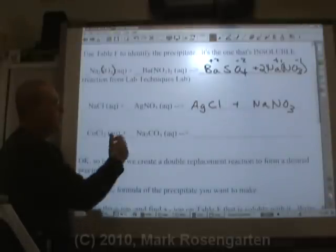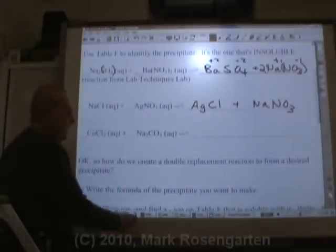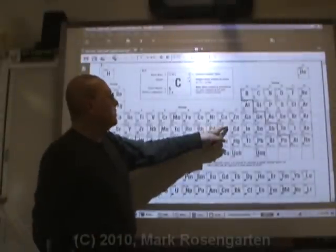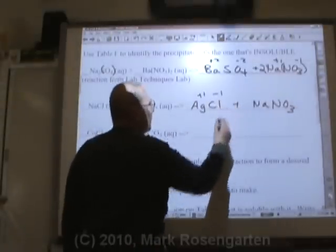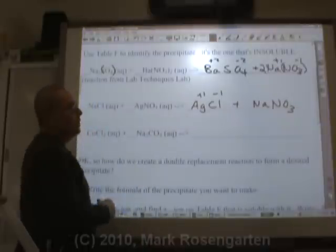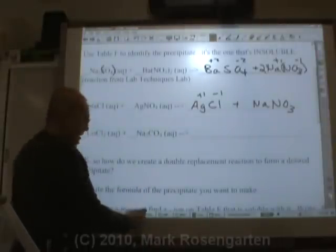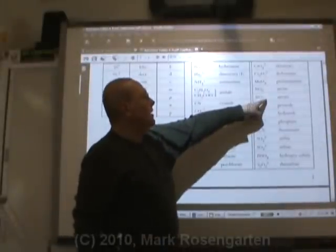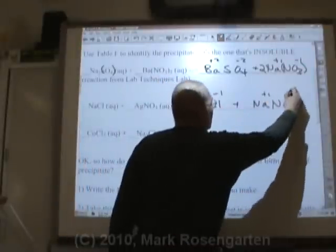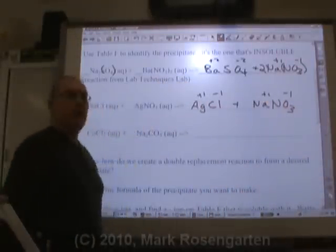Let's get some charges here to write some formulas. Ag and Cl. Ag is plus one. Cl is minus one. What about sodium nitrate, Na and NO3? Na is plus one and NO3 is minus one. So that's the formula for sodium nitrate.